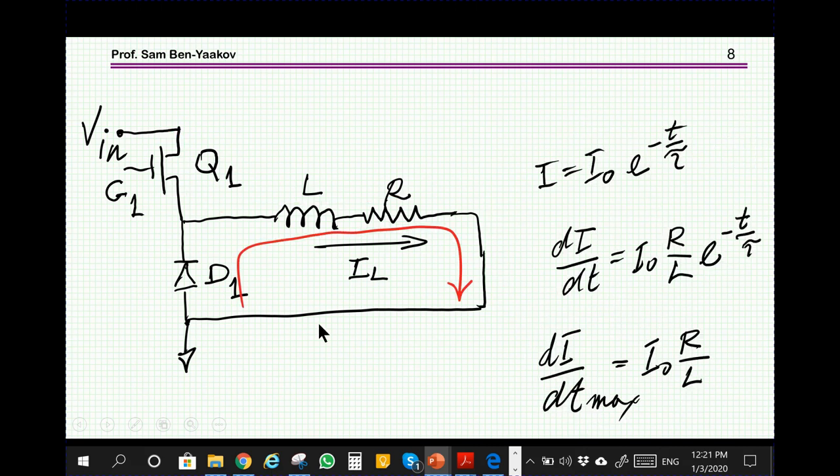Now what happens when the current has to be reduced? In this case, the current is enclosed here, and the rate at which the current will go down depends only on this circuit, which is just an RL circuit. This is the expression for the reduction of the current as a function of time, and therefore the maximum rate at which the current can go down will be this expression.